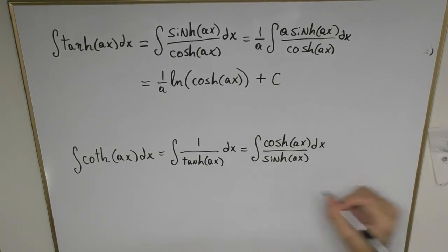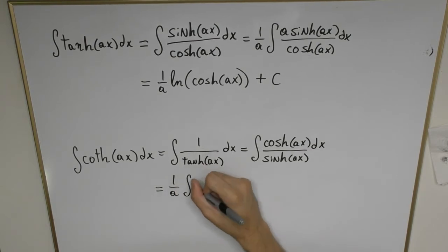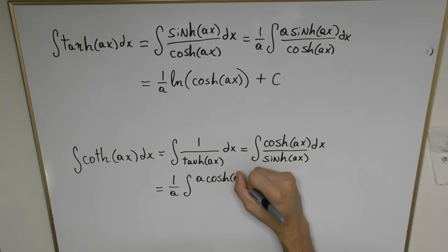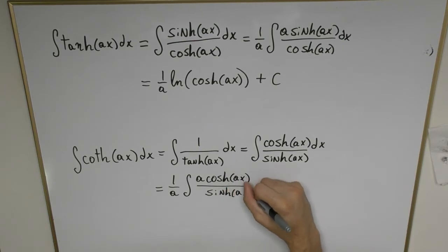We're going to fix that by placing 1 over a outside the integral and then an a factor inside like this, and then divided by hyperbolic sine of ax.